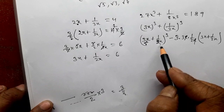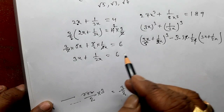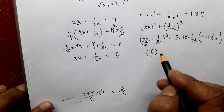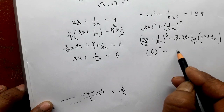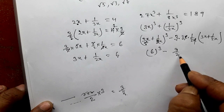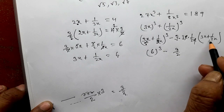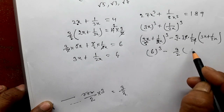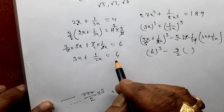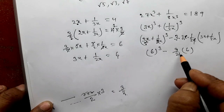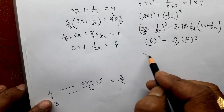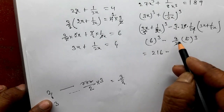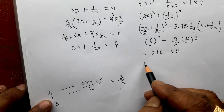So 3x plus 1 by 2x has a value. So 6, cube minus 3 into 3 is 9. So 2 into 3x plus 1 by 2x gives a value. So 6 — 2, 3 is 6.